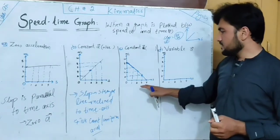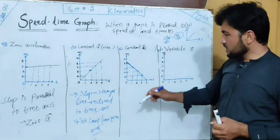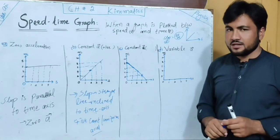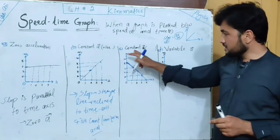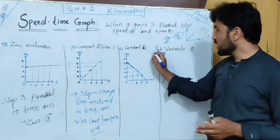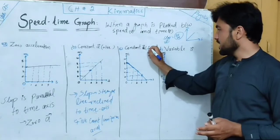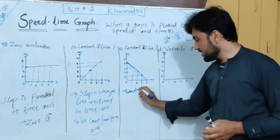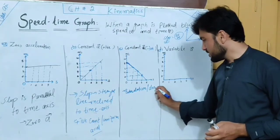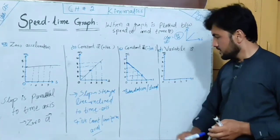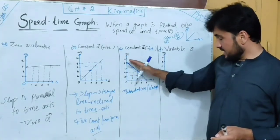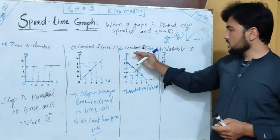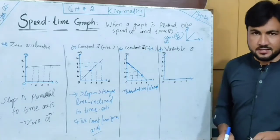The acceleration is constant — this is negative constant acceleration. In this case it is retardation. In the previous lecture we discussed retardation or deceleration. This situation on the time axis represents constant acceleration or negative constant acceleration.